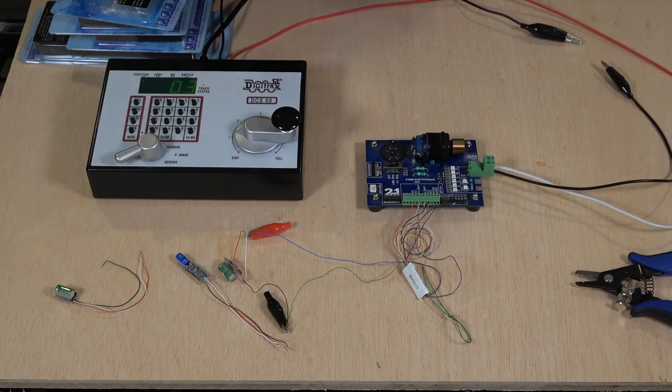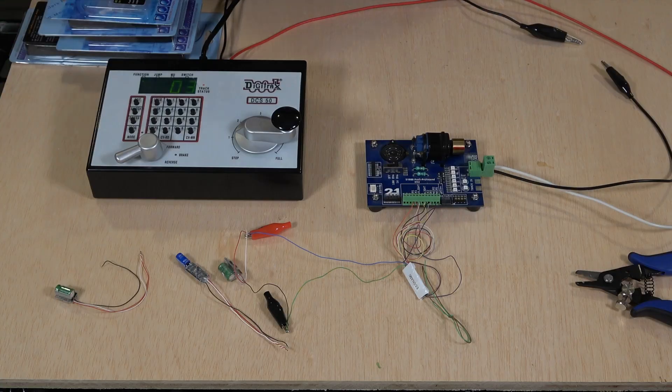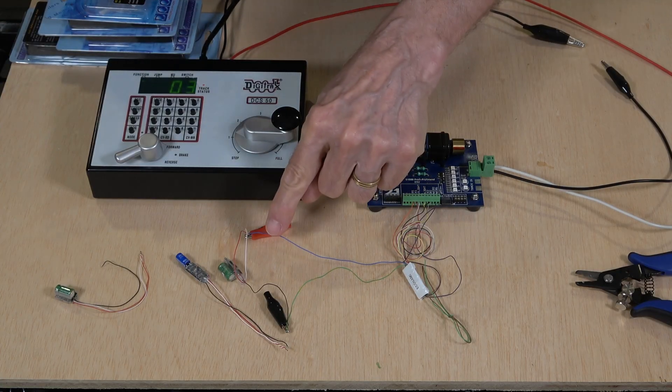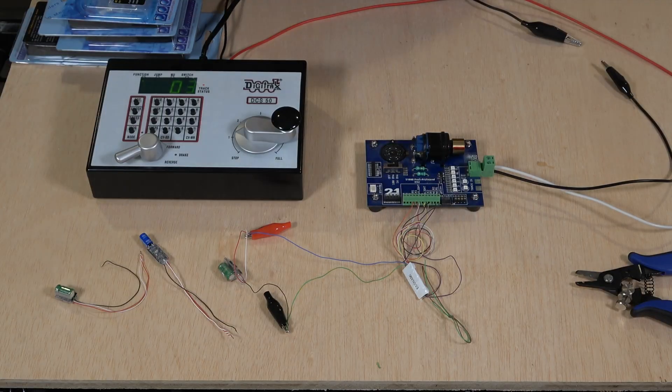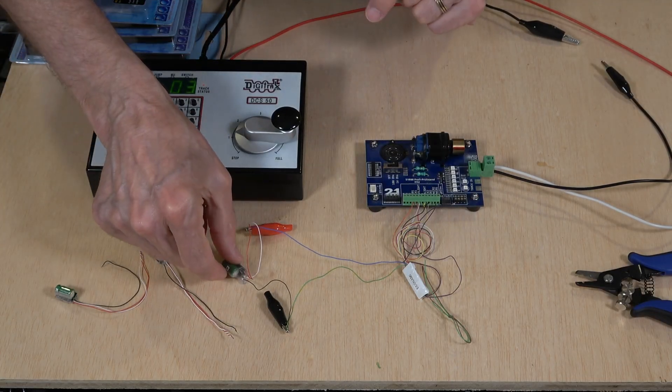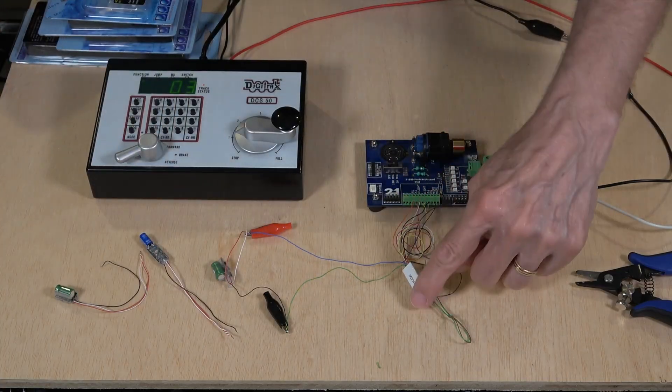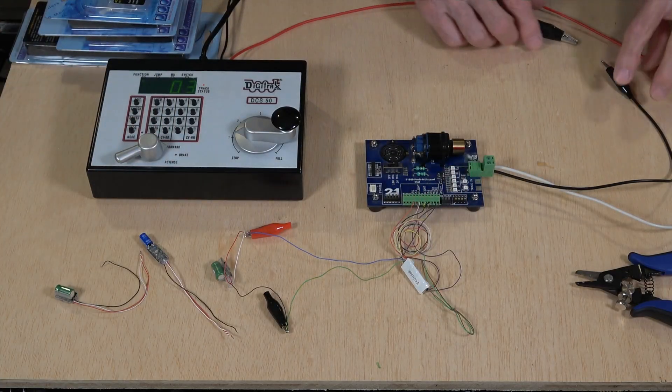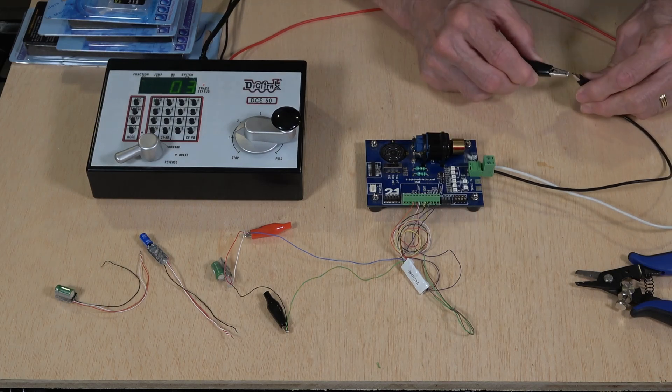Various companies use different colors for these. Even though the NMRA standard is to use blue for the positive, and black and white for the ground. At this point, I have the power bridge Stay Alive connected to the Econami decoder. So let me make a connection here, and we'll fire this up and see what it sounds like.